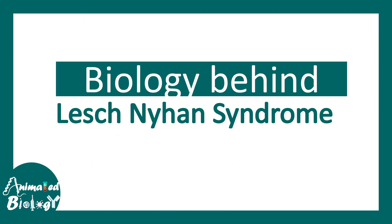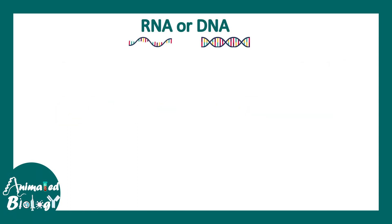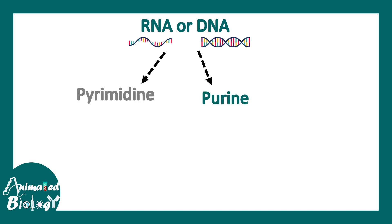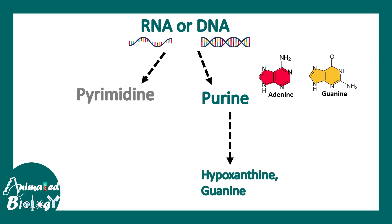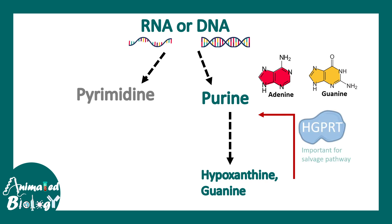Now let's understand the biology behind Lesch-Nyhan syndrome. When DNA or RNA are degraded, they form pyrimidines and purines. Purines — that is adenine and guanine — get broken down by a multi-step pathway into hypoxanthine and guanine. This hypoxanthine and guanine is then recycled by the HGPRT enzyme, and this pathway of recycling hypoxanthine and guanine to form purines again is known as the purine salvage pathway.